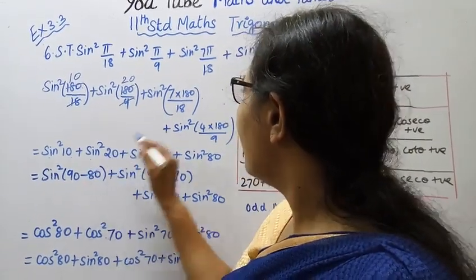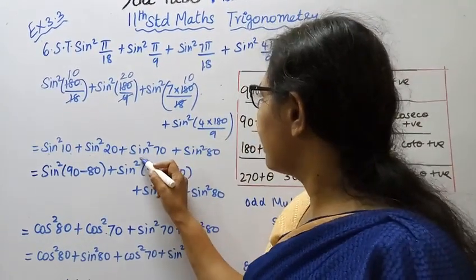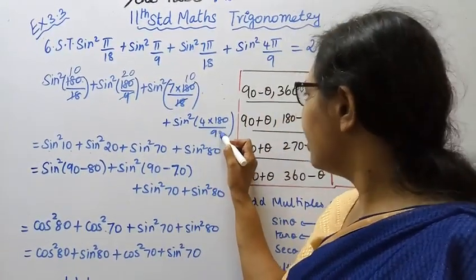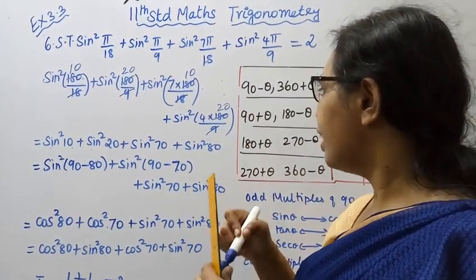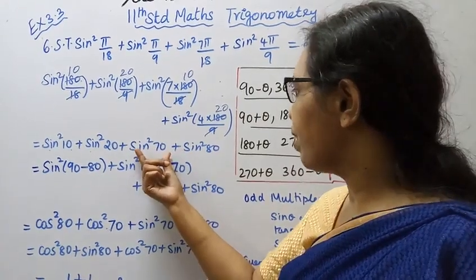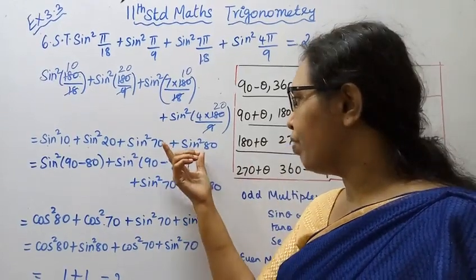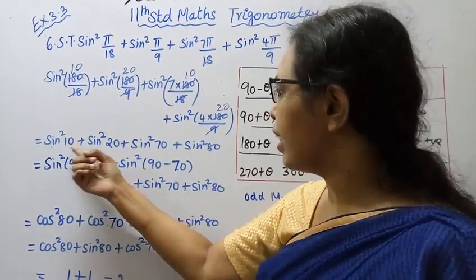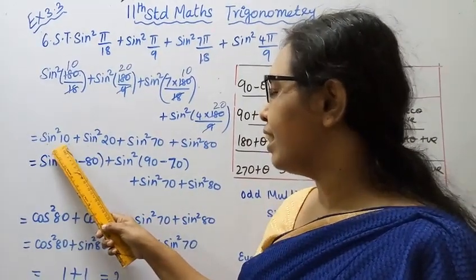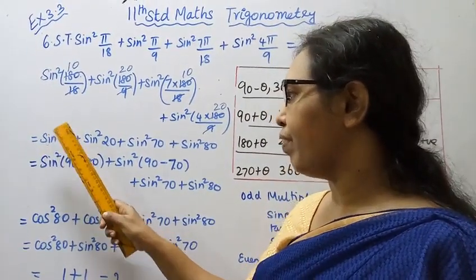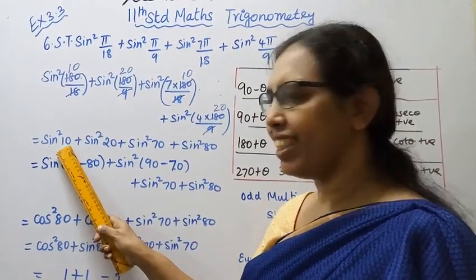This is 70, so sine square 70. This is 20, then sine square 80. So we have sine square 10 and sine square 20 and sine square 70 and sine square 80.